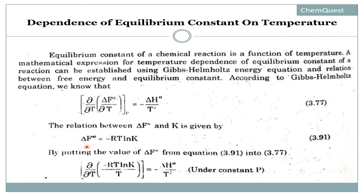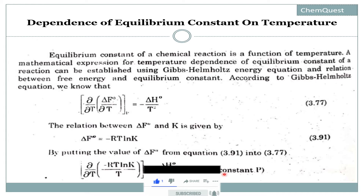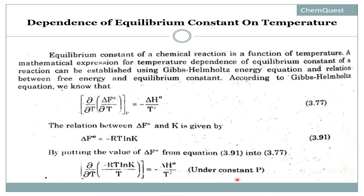So when we put the value of ΔF° into the Gibbs-Helmholtz equation, this equation will become: (∂/∂T)(−RT ln K / T) equals minus ΔH°/T². We are studying this under constant pressure.